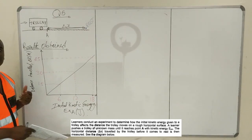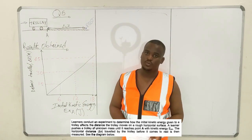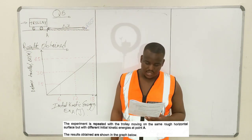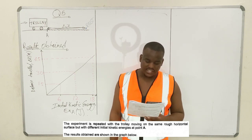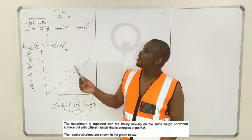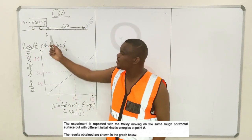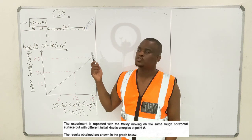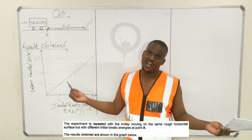The experiment is repeated with the trolley moving on the same horizontal surface but with different kinetic energies at point A. This experiment is done multiple times, giving the trolley a different kinetic energy each time to see how far it will travel from its original position before it comes to rest. Because eventually you push it and it comes to rest at the end. So you have this initial kinetic energy and the final kinetic energy is zero — the trolley must come to rest.